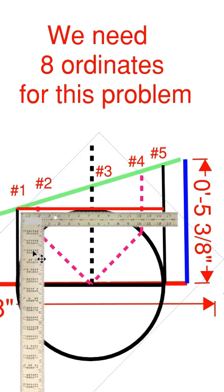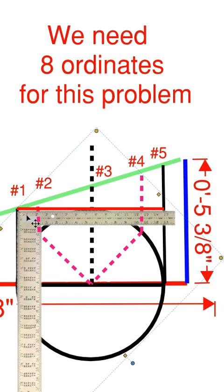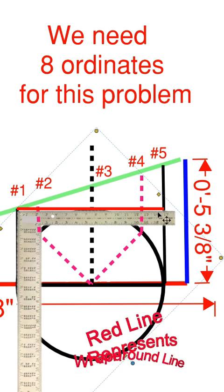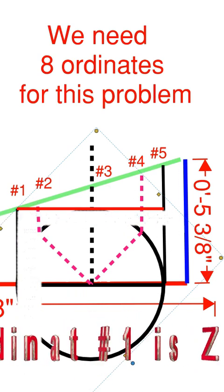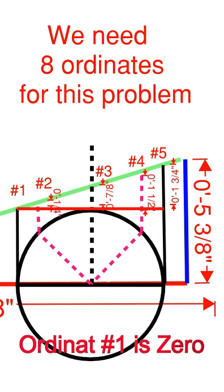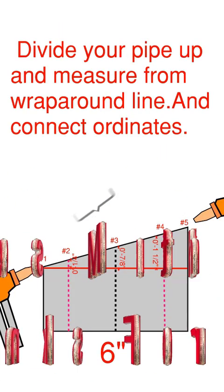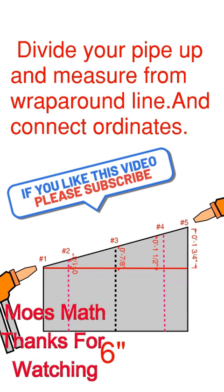Now take your square, bring your square over from the outside edge and go perpendicular and draw that red line. That red line is going to represent your wraparound line. They're going to be labeled 1, 2, 3, 4, 5. Now from that red line, measure to the cut line and those will be your ordinates. Divide your pipe up and measure from the wraparound line and connect the ordinates and cut accordingly.